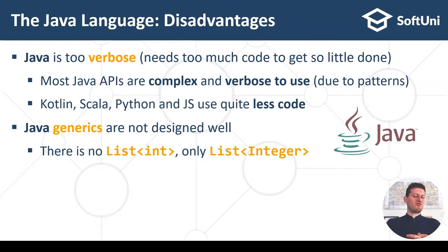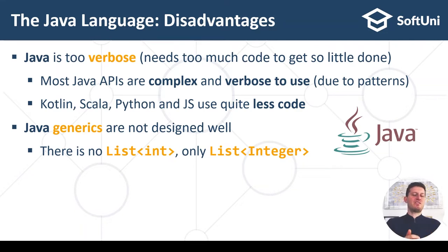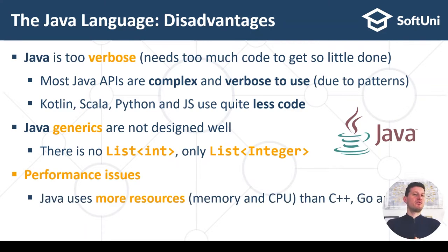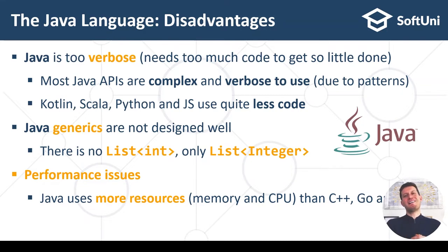Another issue in the Java design is that it doesn't have well-designed generics, meaning you cannot have a list of integers cleanly. When you have a list, set, or other data structure, you always need to deal with objects instead of primitive types, which causes many headaches and unpleasant effects. Java also has some performance issues — it uses more memory and more CPU than more efficient languages like C++, Rust, Go, and others which are optimized for performance.